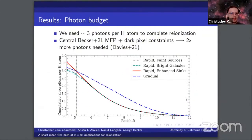Our last result is the photon budget required to complete reionization. This plot shows the cumulative number of absorptions per hydrogen atom in each of our models with reionization ending at redshift 5.1. We find that all of our models require about three photons per hydrogen atom to complete reionization, which is a factor of 1.5 to 2 more than has been found in many previous works.